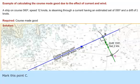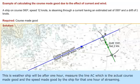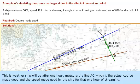Mark this point C. This is where the ship will be after one hour. Measure the line AC, which is the actual course made good and speed made good by the ship for that one hour of steaming.